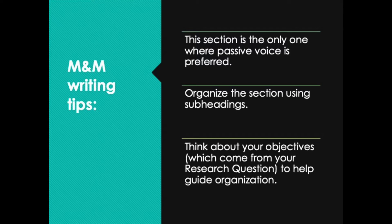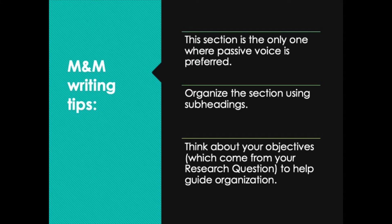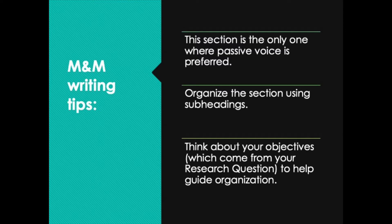Let's look at some tips for writing the Materials and Methods section. In terms of writing style, this section is the only section in the paper where the passive voice is preferred. Secondly, you want to organize this section using subheadings, which will greatly help your reader follow what you're doing and quickly find information when referring back to this section. Also think about organization based on the objectives you presented in the introduction, which came from your research question — this will help you decide how to organize the paper and choose your subheadings.